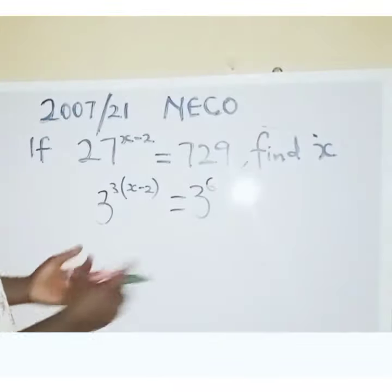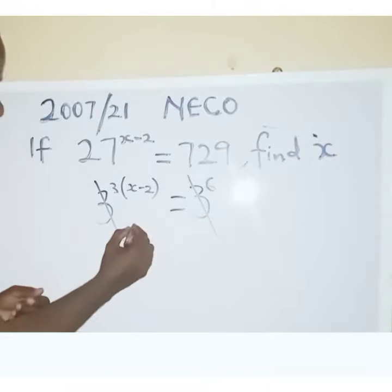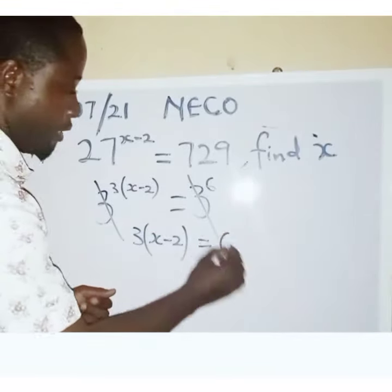Now, the next thing, since the bases are the same, I'm going to cancel them. Then I'm going to have 3 cancel 3. Then I'm going to have 3 into bracket x minus 2 equals 6.